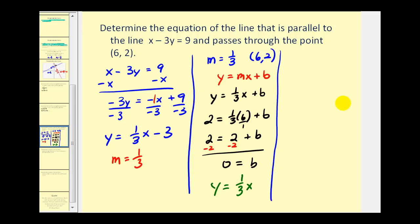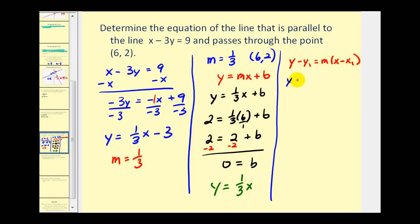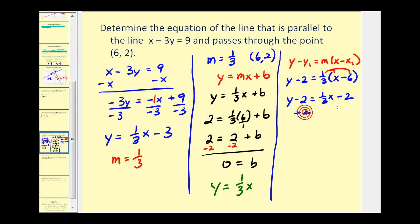I also want to show this using point-slope form. Instead of y equals mx plus b, we use y minus y₁ equals m times (x minus x₁). So we'd have y minus two equals one-third times (x minus six). Distributing the one-third gives one-third x minus two, and adding two to both sides gives the same result — confirming our answer.